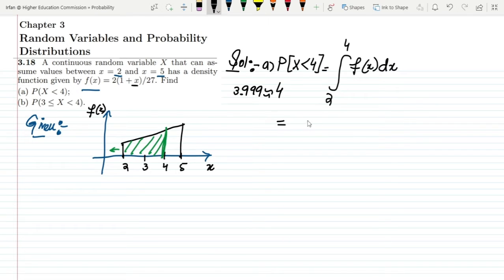Now putting their values, what I will get here—this will be the integral from 2 to 4, the value of f(x) is 2(1 + x) / 27, and here we will have dx.